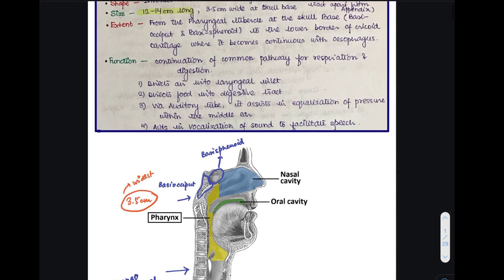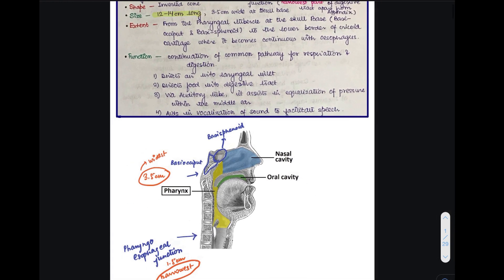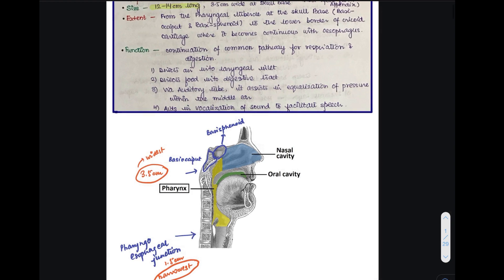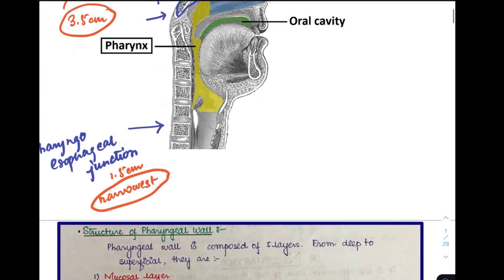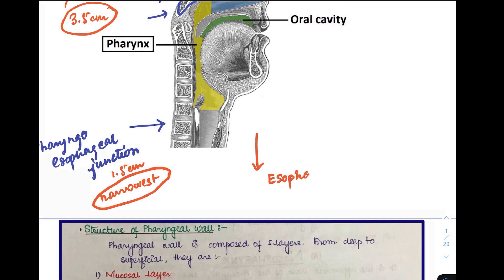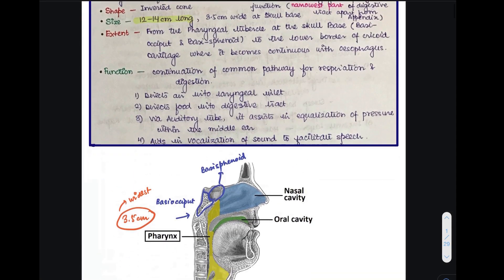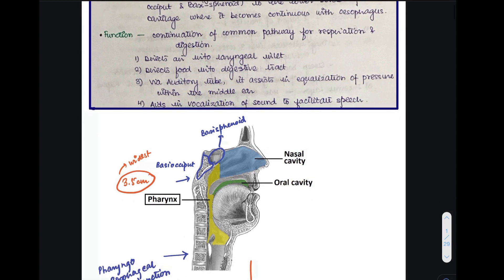Talking about the extent, the pharynx extends from the pharyngeal tubercle at the skull base and continues up to the lower border of the cricoid cartilage, where it continues further into the esophagus. Coming to the functions of the pharynx, it is a continuation of the common pathway of two very essential functions: respiration and digestion.